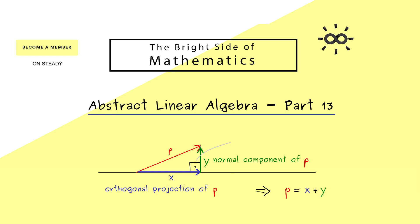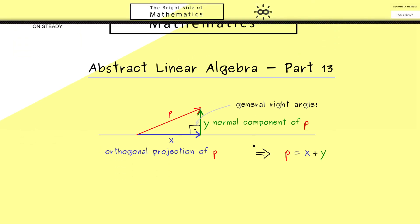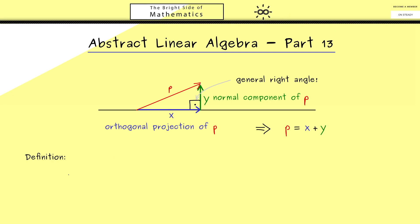However, this right angle here should be seen in a general context. It's a general right angle, which means it's only given by our inner product. So you immediately see, this is a general and important concept we should put into a formal definition. In other words, it's not a problem at all to generalize our picture here. However, the general definition of an orthogonal projection we will do in the next video.